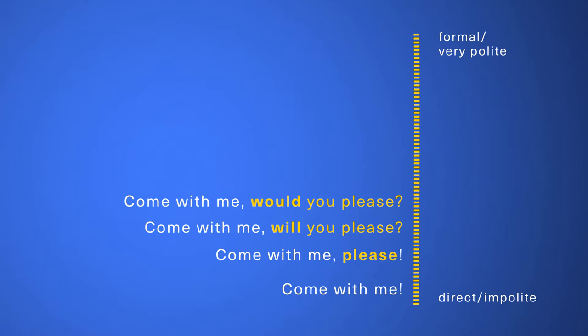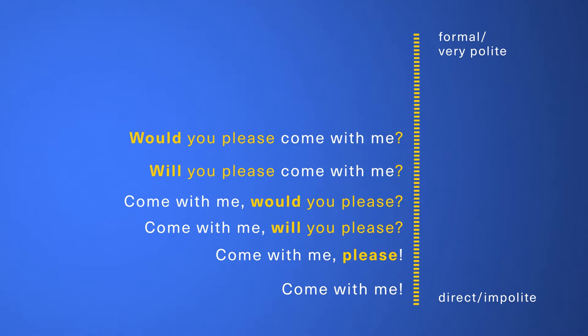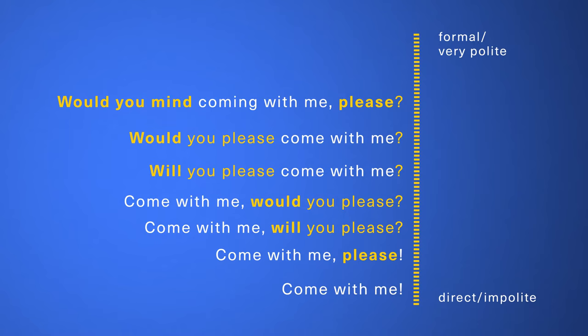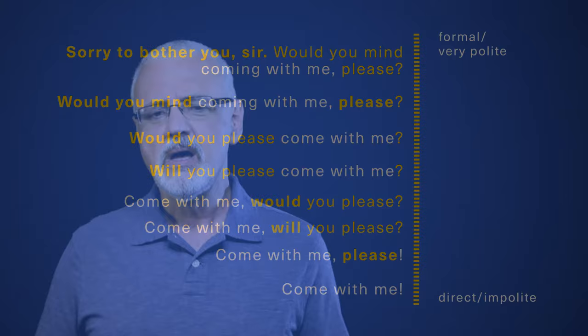What if we got rid of it altogether? 'Would you please come with me?' Oh, that's even more polite. We could go a step further: 'Would you mind coming with me, please?' We could even say, 'Sorry to bother you, sir. Would you mind coming with me, please?' An important point to take away is that sociolinguistics studies how language reflects social norms. Different languages may have different mechanisms — different pronouns, particles, or syntax — to follow social norms and mark levels of formality.